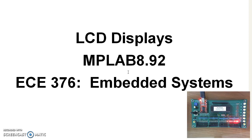I'd like to write a C program to display a counter. This will build a clock so you can display hours, minutes, seconds, and tenths of seconds.